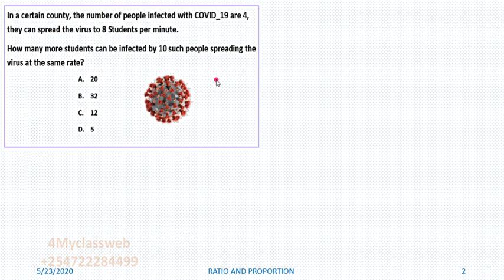Let me explain a bit. We have 4 people who are already sick, and because this virus can be transmitted through infection, the 4 people are capable of infecting 8 students per minute. Then these 4 people have increased to 10. The question is: how many more students can be infected by 10 such people spreading the virus at the same rate? You would expect that because more people are already sick, they should infect more students.